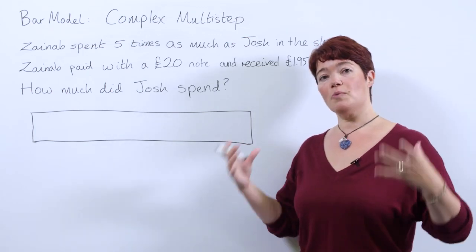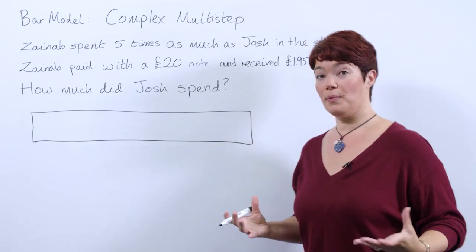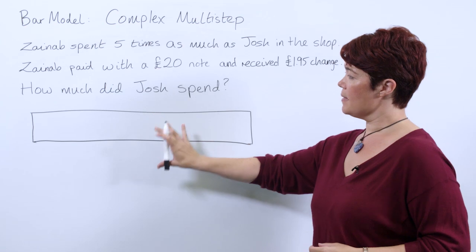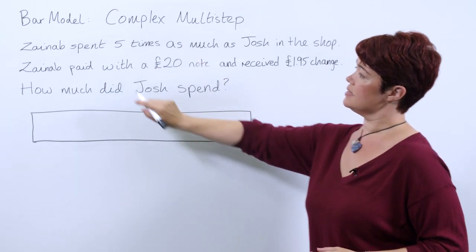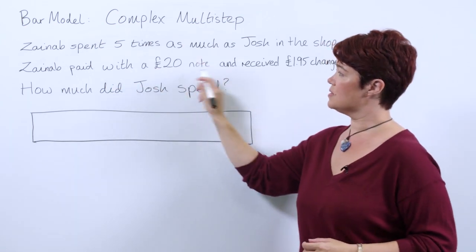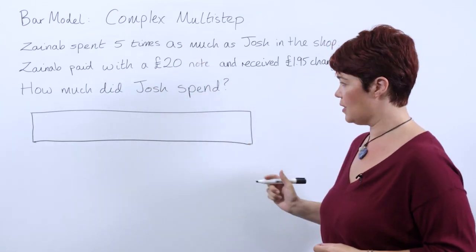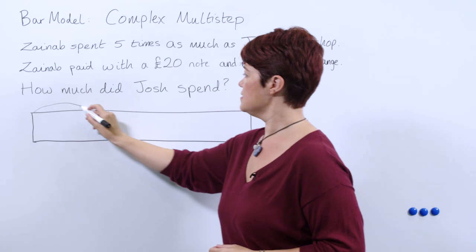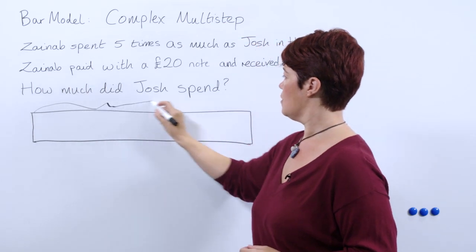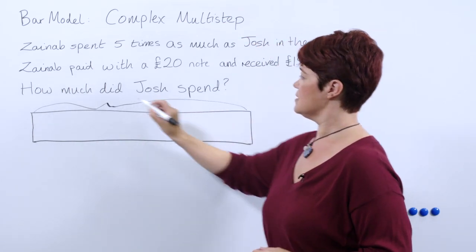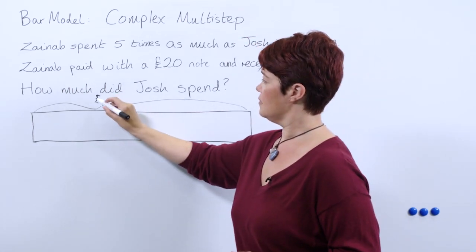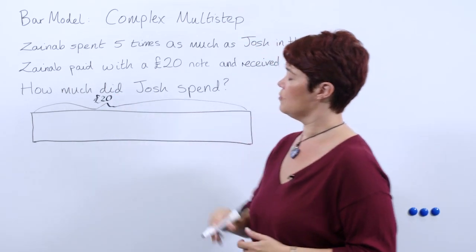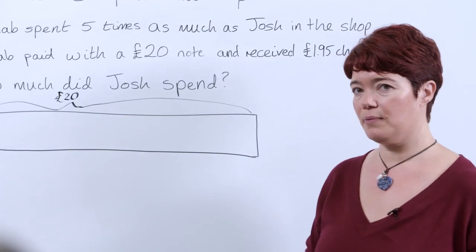So we're going to start with what we know. We're starting with a bar, and what we know is Zainab paid with a £20 note. So this bar represents what Zainab used to pay — a £20 note.